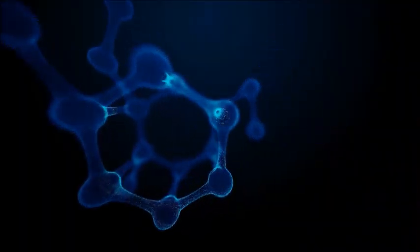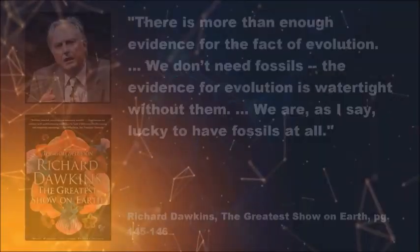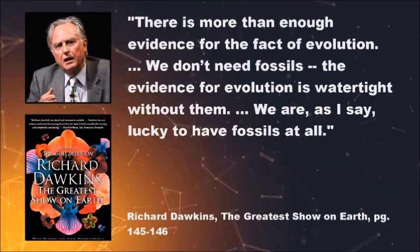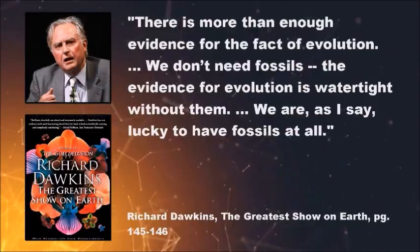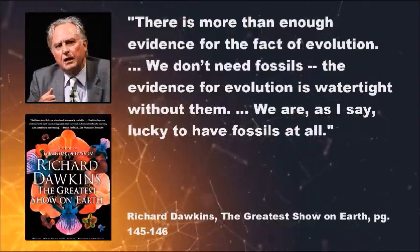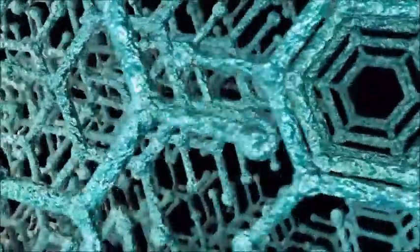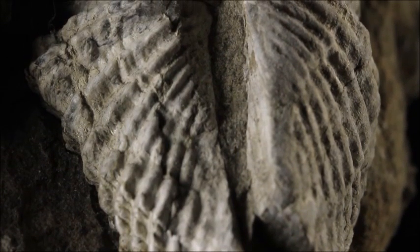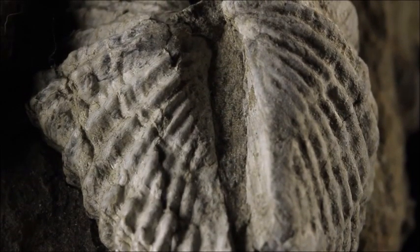Some evolutionists, like Richard Dawkins, have tried to downplay the importance of the fossil record. He says: 'There is more than enough evidence for the fact of evolution. We don't need fossils. The evidence for evolution is watertight without them. We are lucky to have fossils at all.' As we saw in our last video, the other evidence offered for evolution is far from watertight. Dawkins knows full well that the fossil record doesn't look good for the theory of common descent, and so he pretends the fossil record is trivial. However, this is just not so.